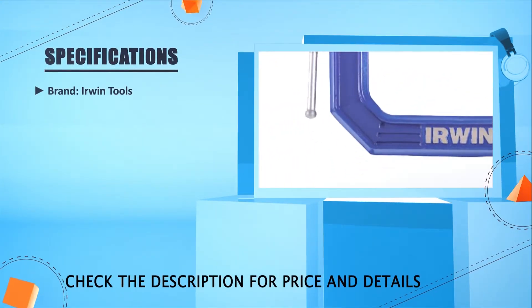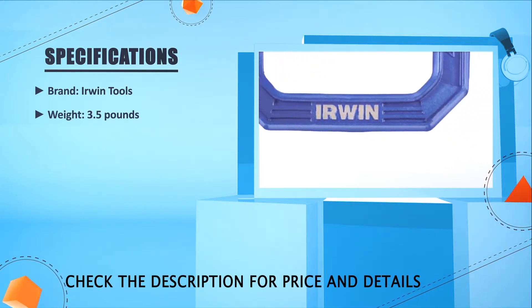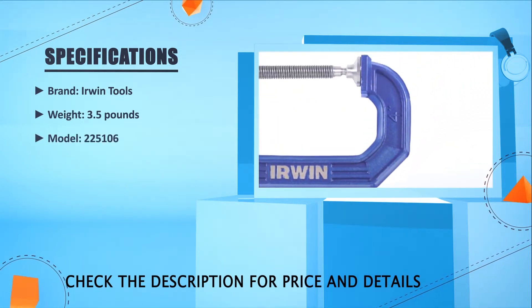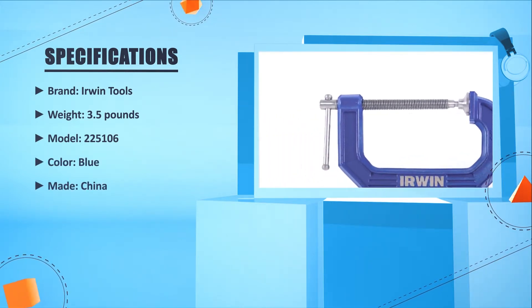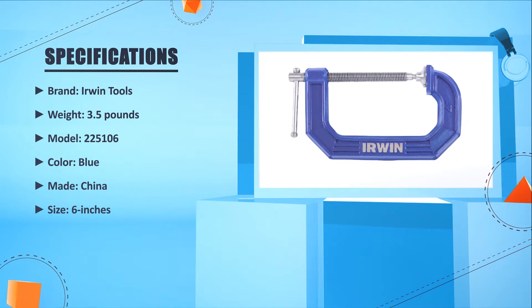Brand: Irwin tools. Weight: 3.5 lbs. Model: 2-2-5-1-0-6. Color: Blue. Made: China. Size: 6 inches.